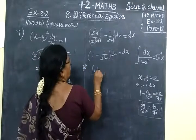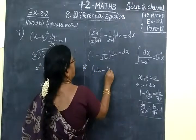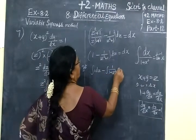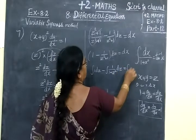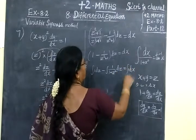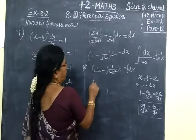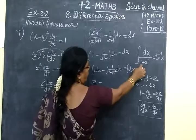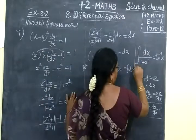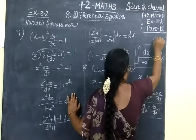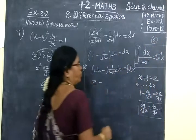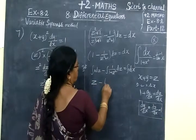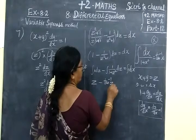Integral of 1 dz minus integral of 1/(1+z²) dz = integral of dx. The integral of 1 is z. For 1/(1+z²), this is a standard form. The integral of 1/(1+z²) dx equals tan inverse z. So here we write z minus tan inverse z.